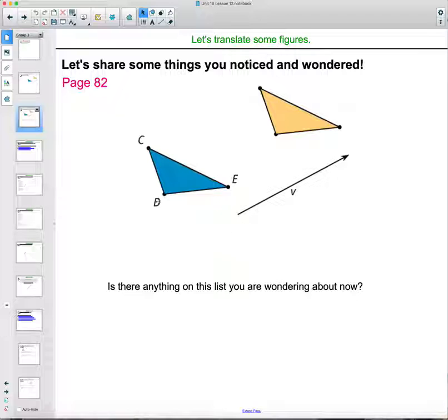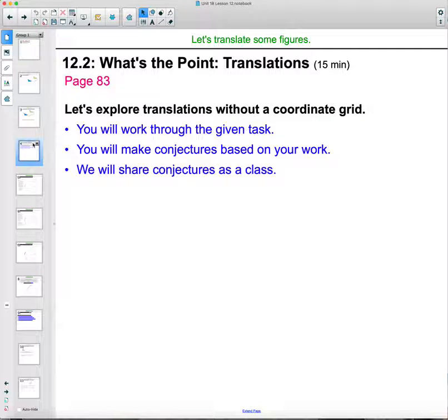Not an exhaustive list, could have wondered or noticed some other things too. So we're gonna look in 12.2 on page 83 in your student workbook at exploring translations without that triangle grid in the background or without even an XY axis.